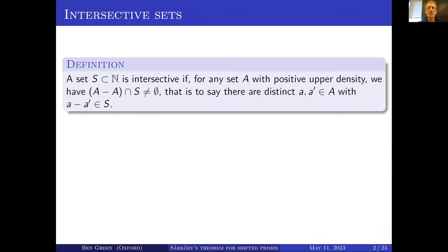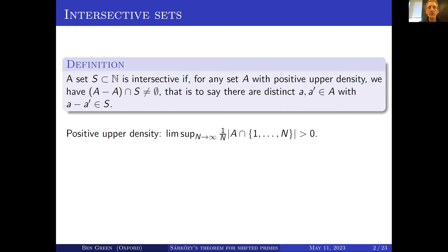An intersective set is a set S of natural numbers with the following property: if you take any set A with positive upper density, the difference set of A — the set of all things that are the difference of two elements of A — has some intersection with S. So there are two distinct elements of A that differ by an element of S.